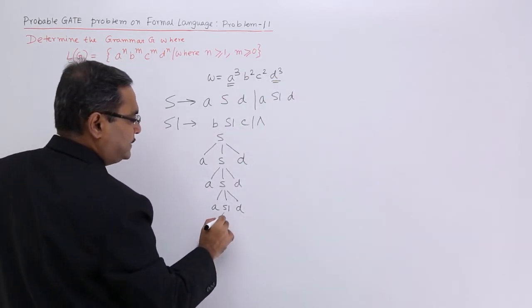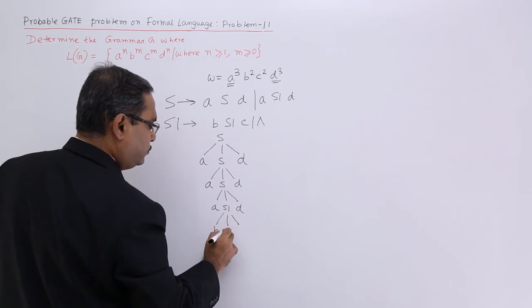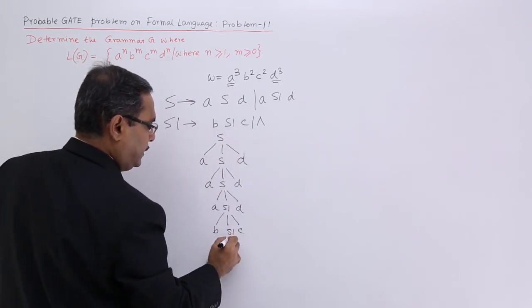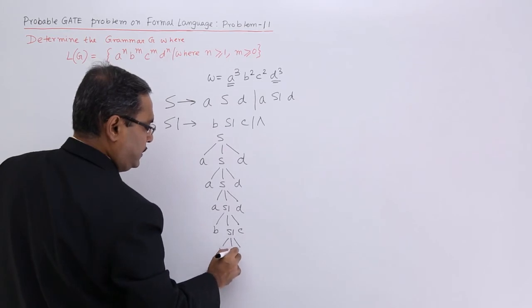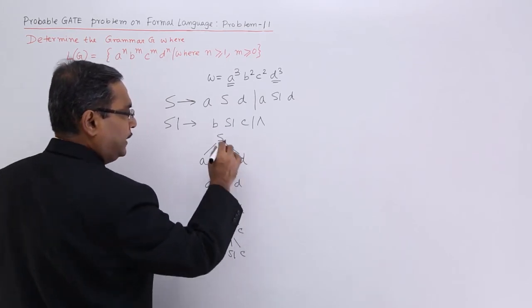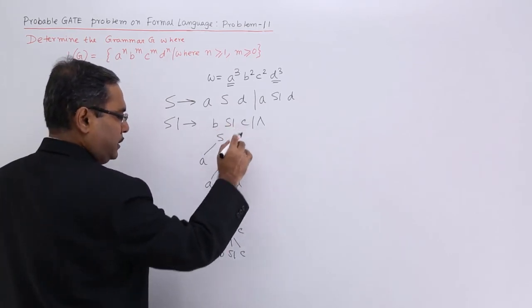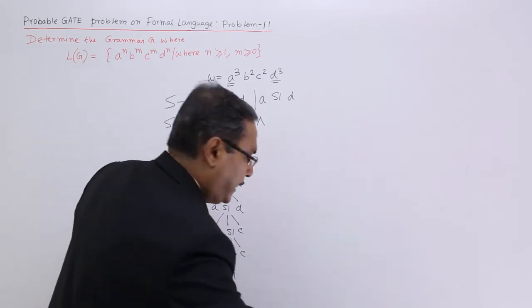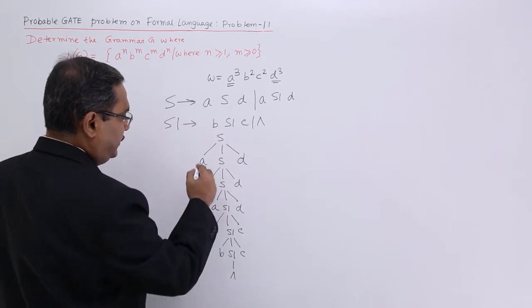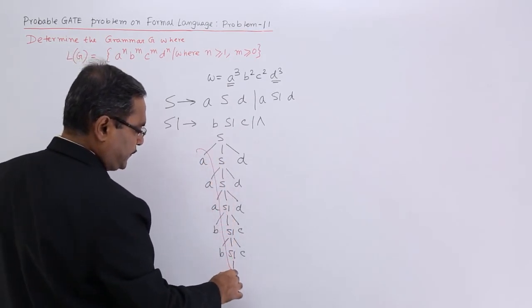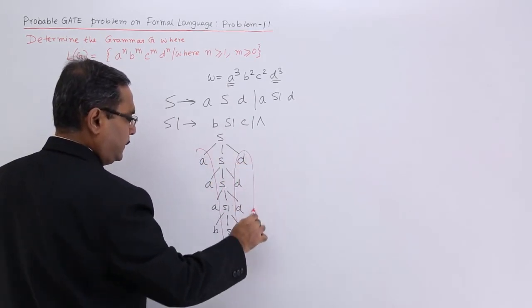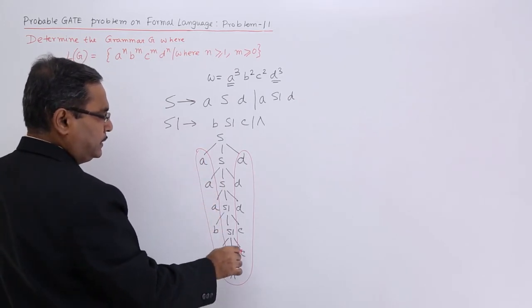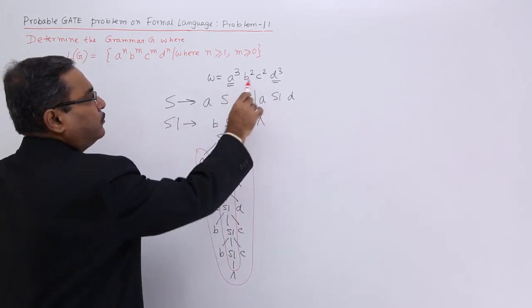Now it is responsibility to form b and c for 2 times. So bS1c I shall go for bS1c. 2 times b have got formed and then S1 will become equal to epsilon. So in this way I can do it. So if you go for the yield you are getting aaabbccddd and that was expected.